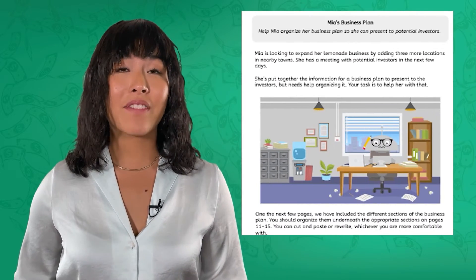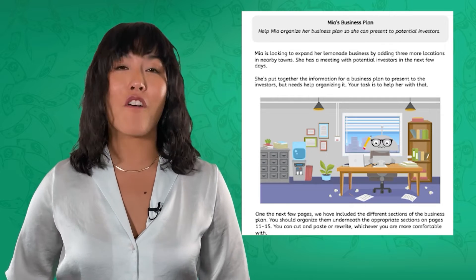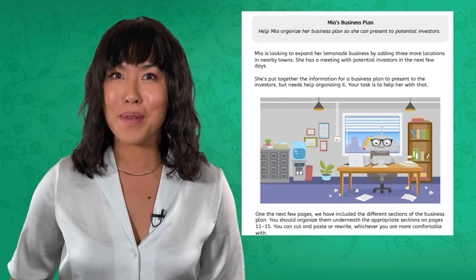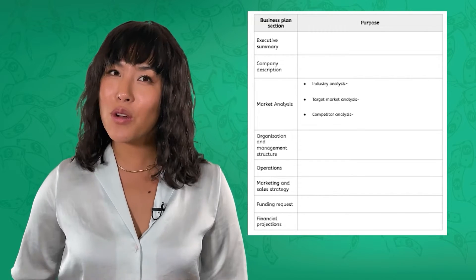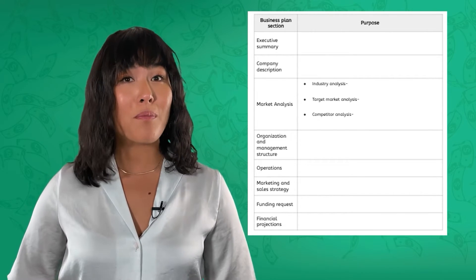Now, while more complex business operations are going to have longer, more detailed business plans, most business plans follow the same general format. Part of the activity that goes along with this lesson involves helping Mia organize her business plan. Use the graphic organizer in the PDF to take notes about the characteristics of different parts of business plans. This will help you as you work on Mia's business plan.